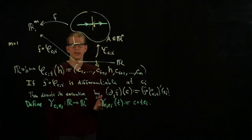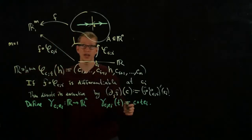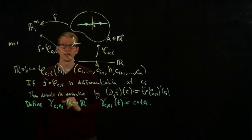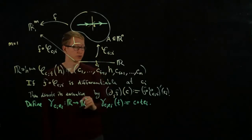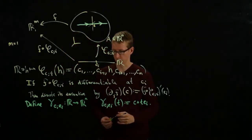At zero it gives me C, and if I take the derivative of this function, you can check that the differential is a linear map from R to R^n. Being such a linear map, it's completely determined by where the number one goes, and the number one goes precisely to e_i.